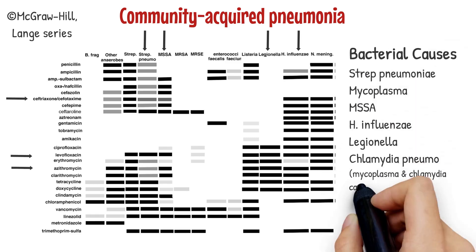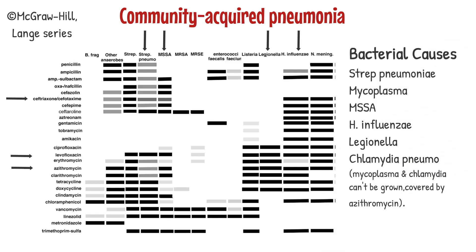The antibiotics that cover these pathogens include ceftriaxone, levofloxacin, and azithromycin. Note that ceftriaxone does not cover legionella, and when this antibiotic is used, it needs to be combined with azithromycin. Also, mycoplasma and chlamydia are very difficult to culture, and in order to ensure they are covered, patients with CAP are given azithromycin.